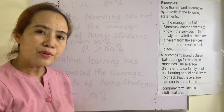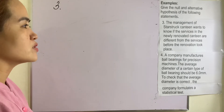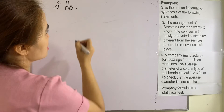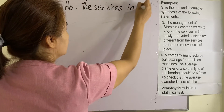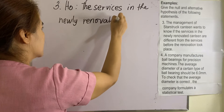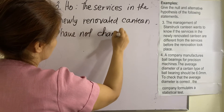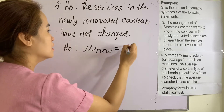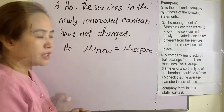Example number three: the management of Starstruck Canteen wants to know if the services in a newly renovated canteen are different from the services before the renovation took place. So this is our null hypothesis: the services in the newly renovated canteen have not changed. In symbol, mu-now equals mu-before — same services before and after.